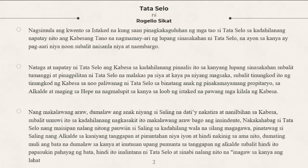Nang makalawang araw, dumalaw ang kanyang anak si Saling na dati nakatira at naninilbihan sa Kabeza — helper ni Kabeza. Umuwi ito sa kadahilanang nagkasakit siya makalawang araw bago ang insidente. Nakakahabag si Tataselo — naisipan na lang nitong pauwiin si Saling sa kadahilanang wala na silang magagawa. Pinatawag si Saling ng alkalde sa kanyang tanggapan.